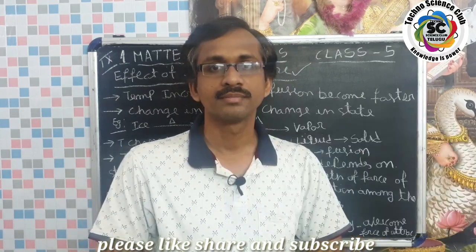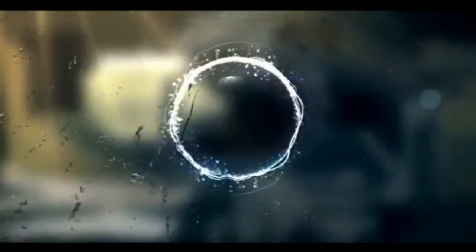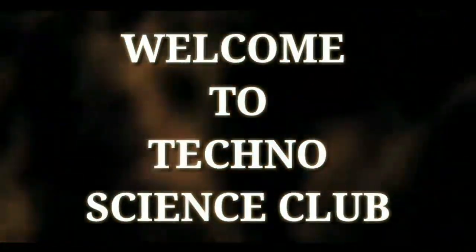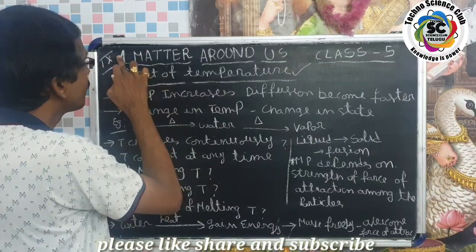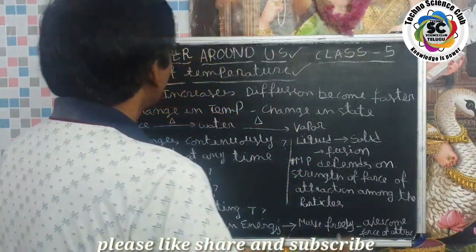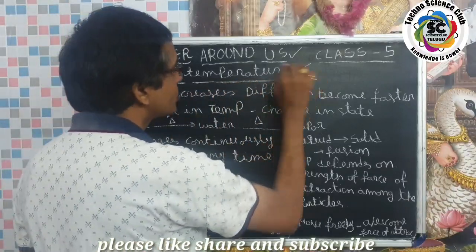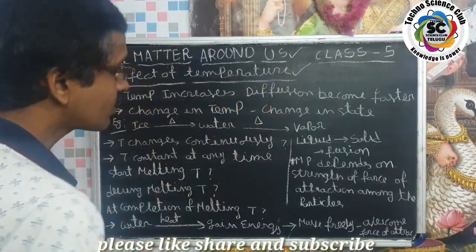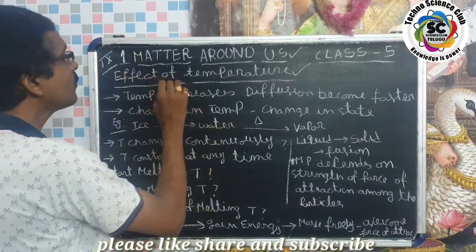Let's go into the topic. Welcome back friends, welcome to TechnoScience Club. In 9th class, English Medium, 1st chapter, Matter Around Us. In this class, we will cover the effect of temperature on diffusion, effect of temperature on diffusion, and effect of temperature on change of state. These are different situations. First of all, effect of temperature.